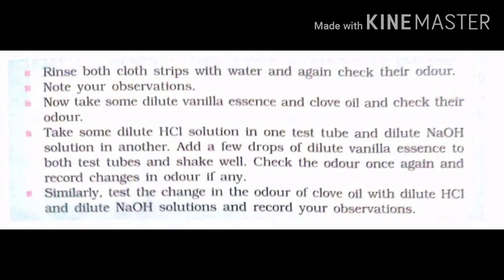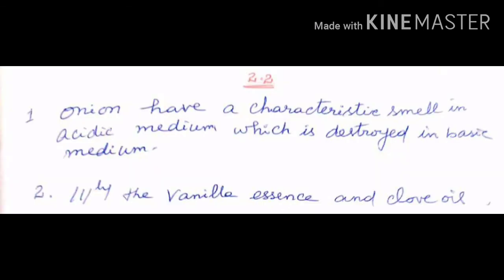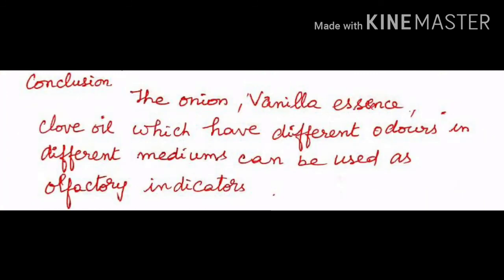Similarly, test the change in odour of clove oil with dilute HCl and dilute NaOH solutions and record your observations. We observed that onion has a characteristic smell in acidic medium which is completely destroyed in basic medium. Vanilla solution produces a specific smell in acidic solution (HCl) but no smell in basic solution (NaOH). Clove oil produces different odours in different mediums. Therefore, onion, vanilla essence, and clove oil can be used as olfactory indicators.